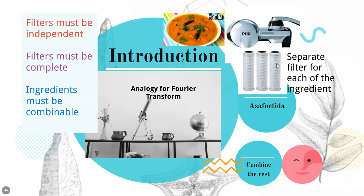Let us imagine, suppose at your home there is a machine having several filters to collect each of the ingredients like mustard, salt, sambar powder, oil, onion, vegetable, coriander leaves, and asafoetida, etc. Imagine you had a few filters lying around. In this picture, for convenience, I am using only three filters. But in the sambar, more than 50 ingredients would have been added.